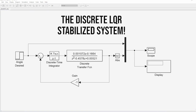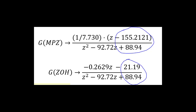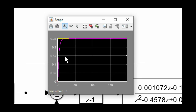We can quickly compare the transfer functions — using the final value theorem, neither produces any error, because that is the whole point of adding a pre-compensator or integral action. You can see that the value of the pre-compensator is slightly different for the continuous and discrete cases, which shows how the discrete case makes an approximation. However, I'll stick to integral action because it's more robust and works for any situation.